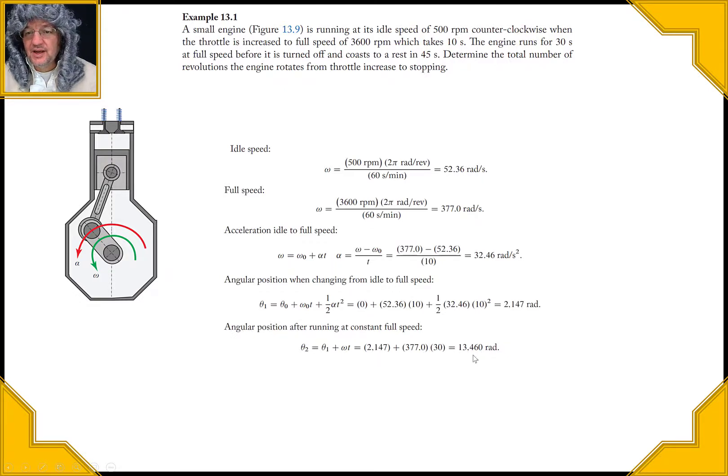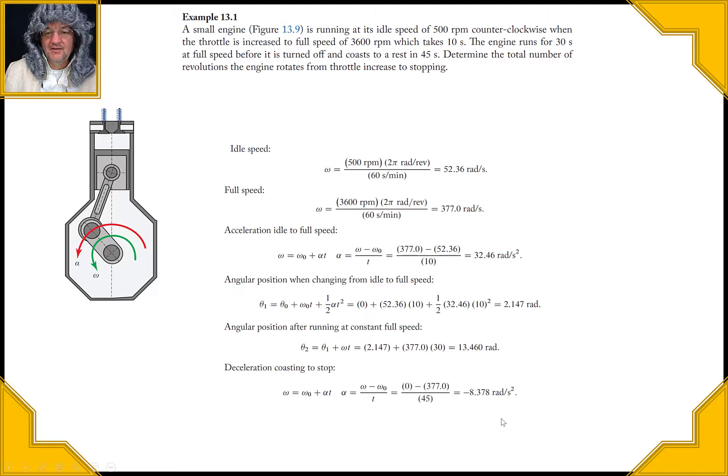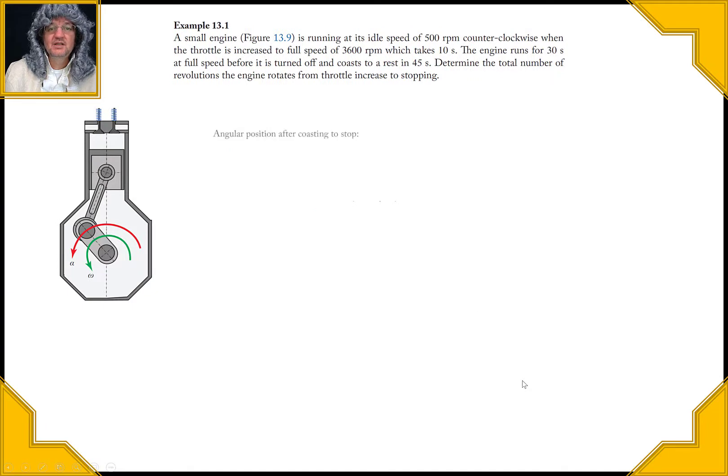So we go ahead and plug those equations in, plug those values in. So this is 13,460 radians that has moved while it's at constant speed. And then we want to find the deceleration right there, so we rewrite this equation and we find that it's 8.378 radians per second, so that's how it's slowing down.